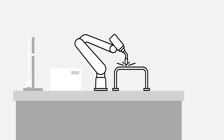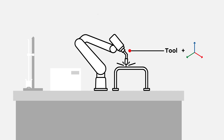For a human being, a tool is a physical object used by a robot to process parts. For a robot, a tool has a coordinate system which enables the robot to move to desired positions. The tool also comes with physical data, crucial for the planning of correct acceleration and deceleration, thereby enabling the robot to stay on its calculated path.